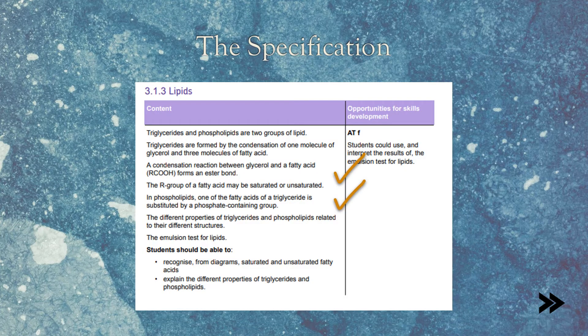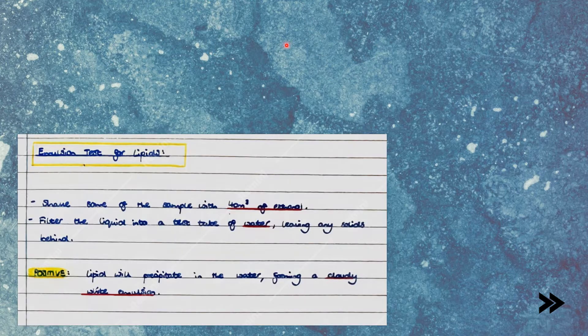Finally, we just need to look at the emulsion test for lipids. To test for lipids, simply shake some of the sample with 4 cm³ of ethanol. Filter the liquid into a test tube of water, leaving any solids behind. If lipid is present, this will precipitate in the water, forming a cloudy white emulsion. Take note of the wording carefully, because if you write something like 'milky,' this sometimes isn't accepted in mark schemes of exams.